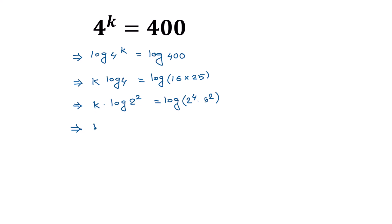Again applying the formula log a to the power b equals b times log a, the left side becomes k times 2 times log of 2. On the right side, applying the formula log of a times b equals log a plus log b, we can write this as log of 2 to the power 4 plus log of 5 squared.